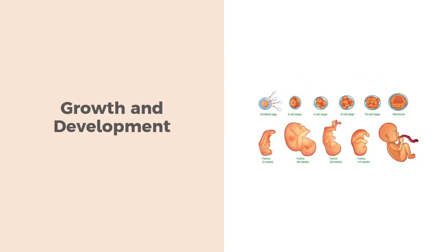Retinoic acid plays an important role in reproduction and embryonic development, particularly in the development of the spinal cord and vertebrae, limbs, heart, eyes, and ears.